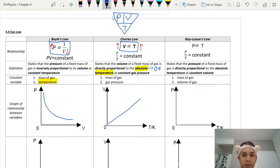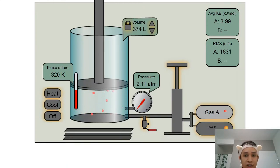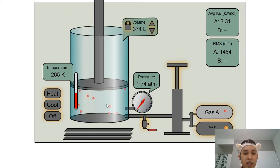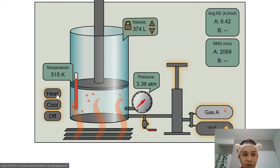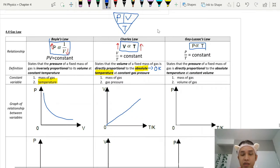Finally, Gay-Lussac's Law — also called the pressure law — studies the relationship between pressure and temperature. Volume is kept constant. When you heat the gas, pressure increases; when you cool it down, pressure decreases. This is based on the collision of air particles: when you heat them, they gain energy and collide faster, so air pressure increases. When you cool them, the air particles move slower and pressure decreases.